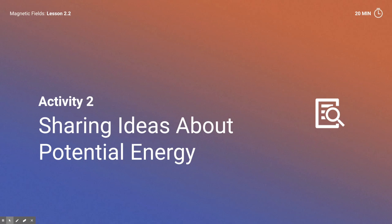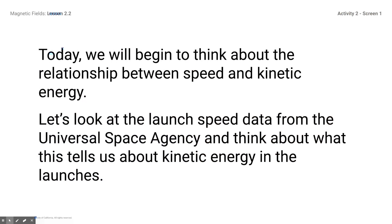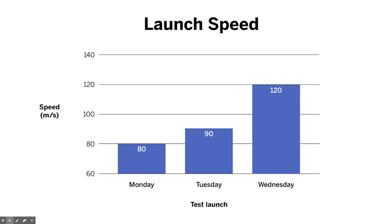Then you'll be ready to move on to activity two, where we will start to connect the articles that you read. We need to understand that there is a relationship between speed and kinetic energy. Kinetic energy is the energy that an object has because it is moving. If we look at the launch speed data from the Universal Space Agency, on Monday we had the magnets farther apart and a speed of 80 meters per second. Then on Tuesday, we moved them closer together, and that gave us a speed of 90 meters per second.